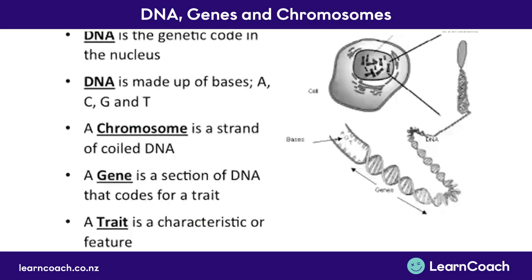Now let's look at what you need to know from this video. DNA is that genetic code in your body - genetic means it comes from your cells - and it codes for everything. DNA is made up of the bases A, G, T and C. These code for everything, and the different types of bases give you different traits. A chromosome is a big strand of DNA that's been coiled up really tightly so that it can fit inside a tiny nucleus. A gene is a small section of that DNA that codes for a particular trait - one will code for your hair colour, your eye colour. A trait is that physical characteristic - your eye colour, your hair colour - that is what you physically look like because of the different code.